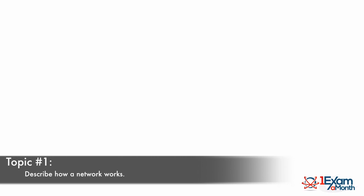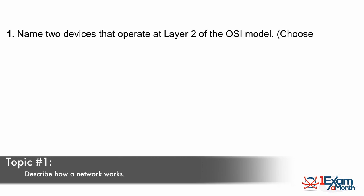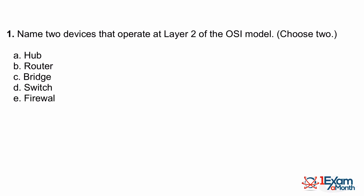The first broad topic area on the 640-911 exam is 'describe how a network works,' and questions in this category are reminiscent of a CCNA exam. Recall that there is no prerequisite for a candidate to have a CCENT or CCNA in route/switch before earning their CCNA Data Center, so we have some fairly general networking questions. Here we're being asked to name two devices that operate at layer 2 of the OSI model — the data link layer. Back in the 1980s, a typical device at layer 2 was an Ethernet bridge.